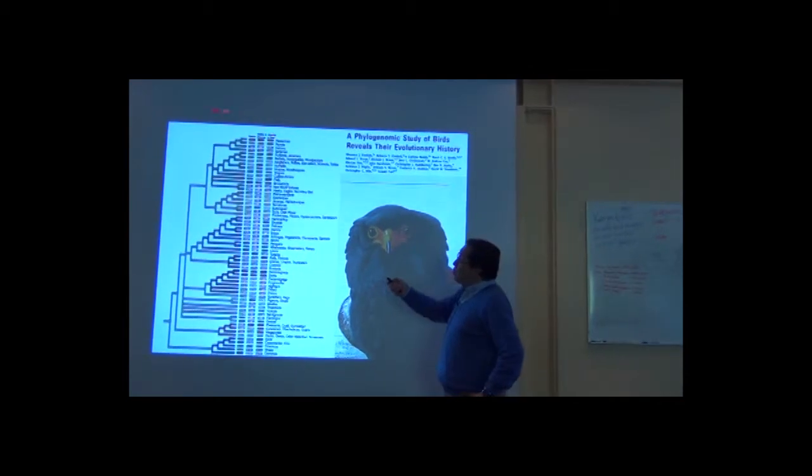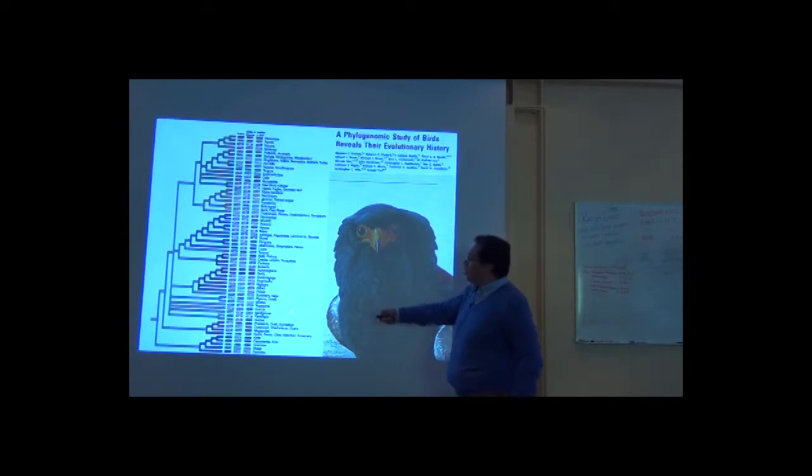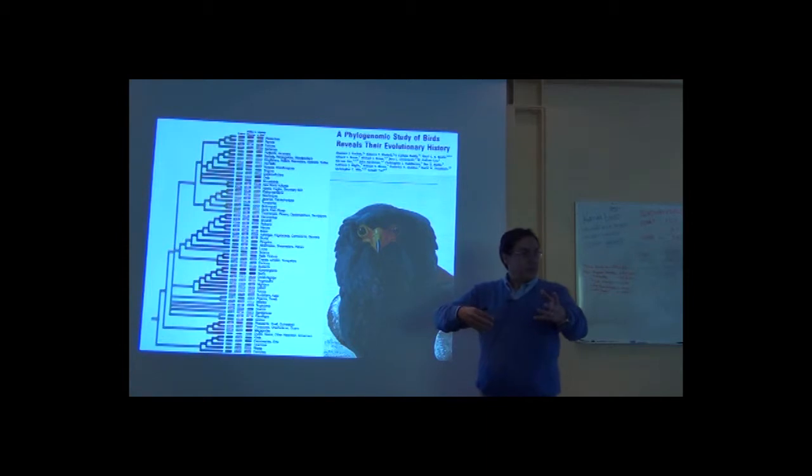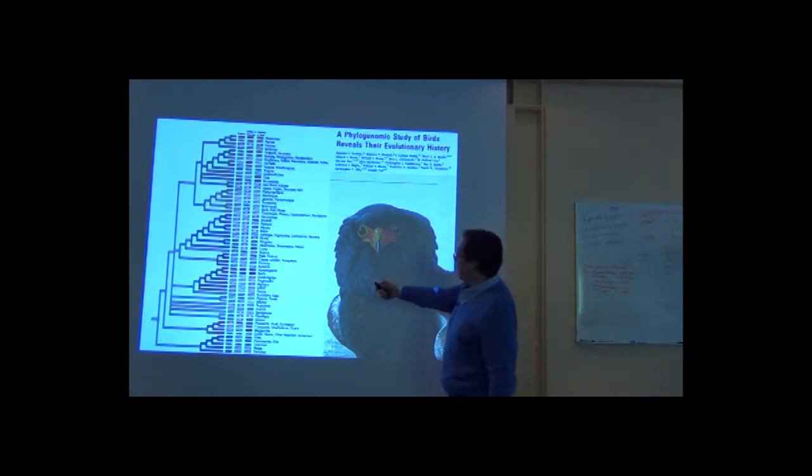And look, when you do a major revision, new information suggests you that the groups that you were recognizing were not right. You have to change everything. And you have to rename and recognize that, for example, these three sets, this set of three columns are depicting three different classification systems.